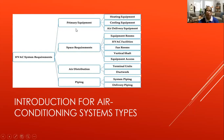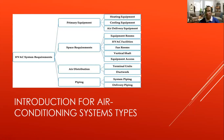The four primary equipment items are: heating equipment, cooling equipment, and air delivery equipment. Space requirements include equipment room, HVAC facilities, fan room, vertical shaft, and equipment access. For air distribution: terminal units and ductwork — those are the ducts hanging from ceilings, visible in malls before they are covered. For piping: system piping and delivery piping using copper, aluminum, or metal tubing appropriate for air conditioning.